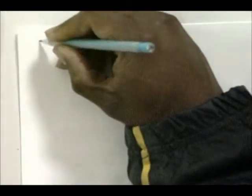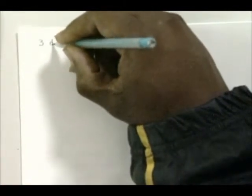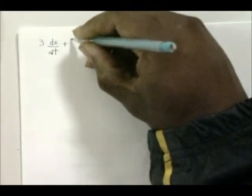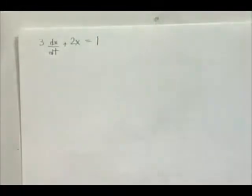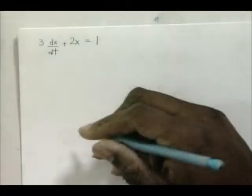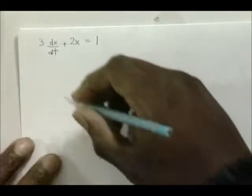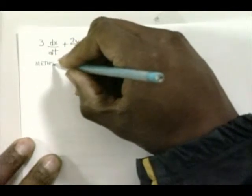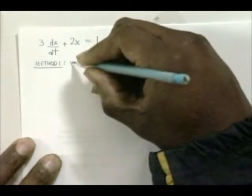We're working with a problem of 3 dx/dt plus 2x is equal to 1. This is called a first-order linear differential equation. The first technique we're going to introduce is called variation of parameters.